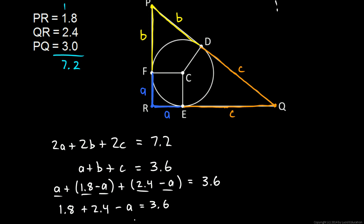So we just rearranged this. Let's see. 1.8 plus 2.4 is, what is that? 1.8 plus 2.4 is 4.2, right? Let's write 1.8. 2 and 4 is 6, 8 and 4 is 12. Carry the 1, yeah, 4.2. So I'm going to continue this right over here. 4.2 minus A is equal to 3.6. So A will have to be 4.2 minus 3.6, which comes out to 0.6 for the radius of the circle.